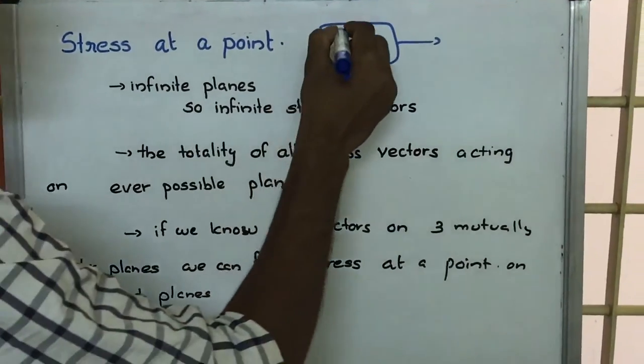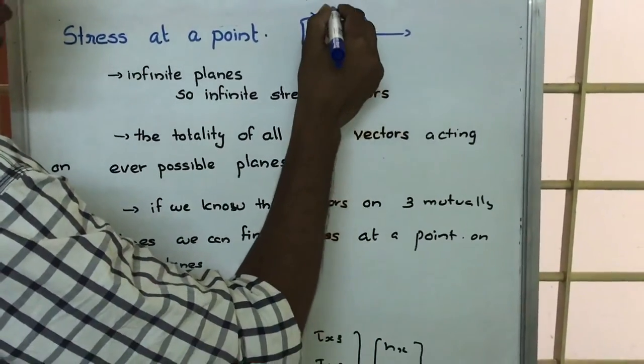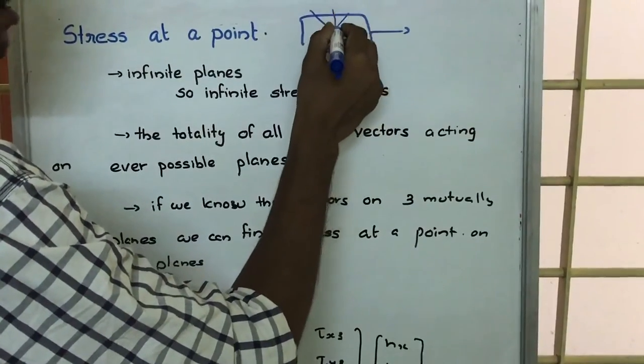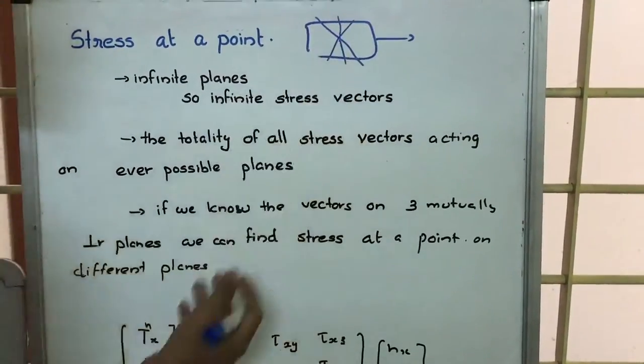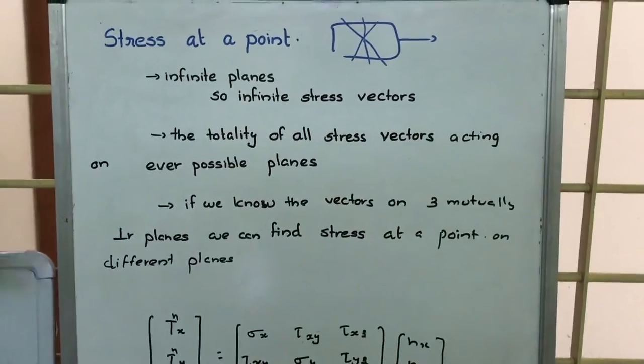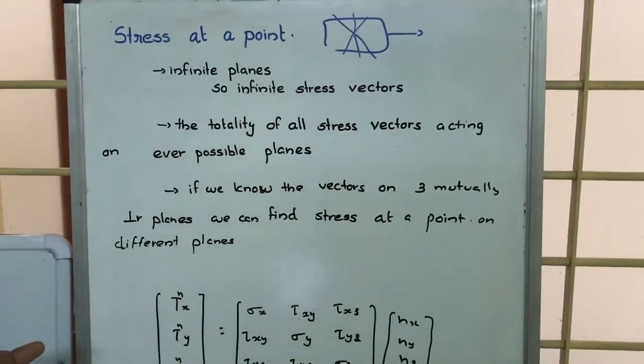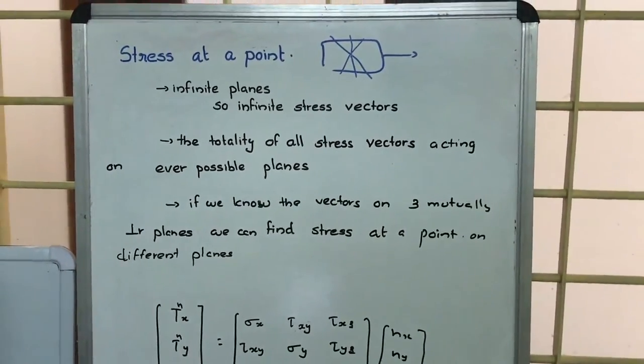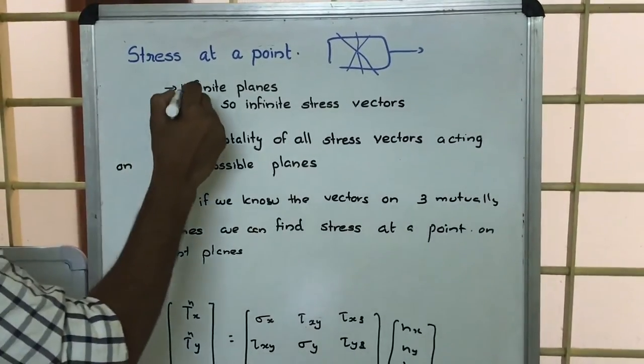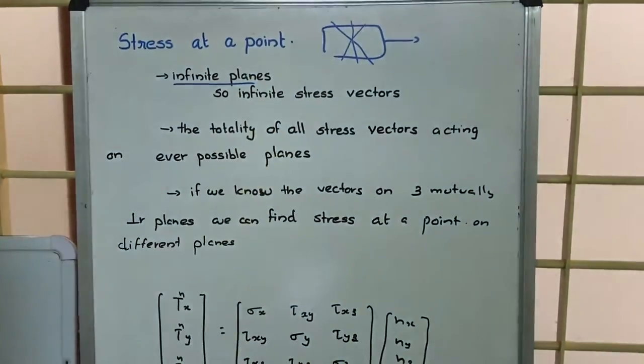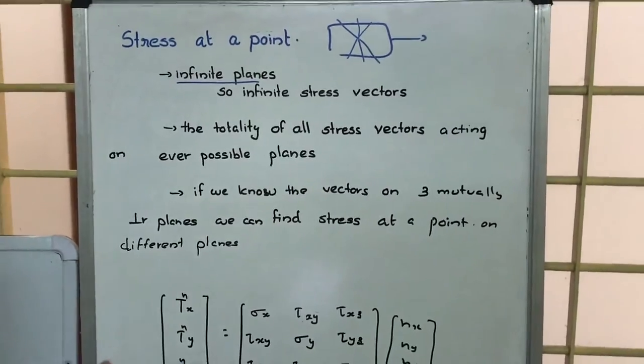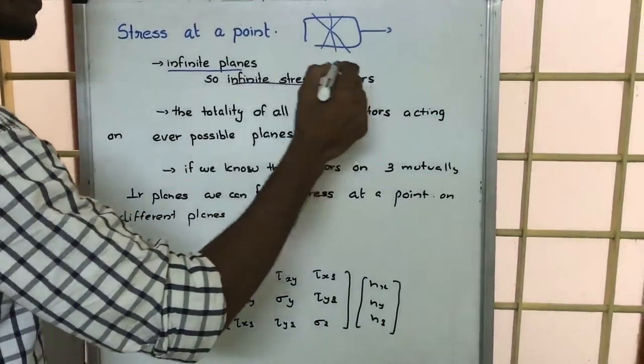Then the peculiarity is that we can draw infinite number of planes through this point and as the plane changes, the area changes. Because of this changing area, force by area will have different values. So through a point, there is the possibility of infinite number of planes and because of this infinite number of planes, there will be infinite stress vectors.